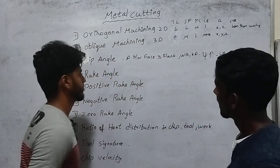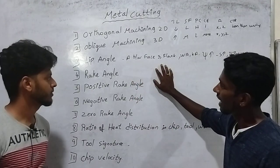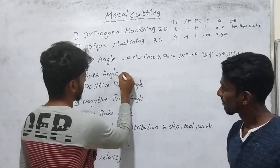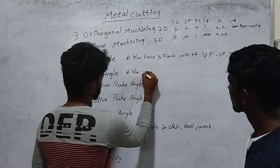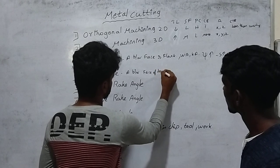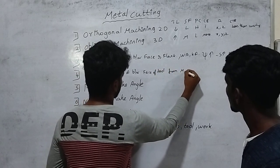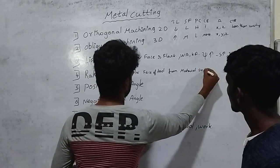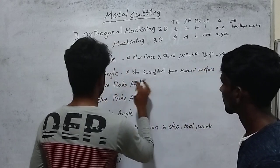If you look at the lip angle — the angle between the face and flank — the rake angle is the angle between the face of the tool and the material surface.